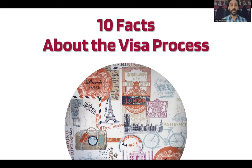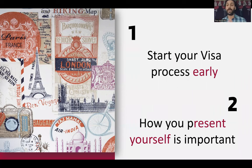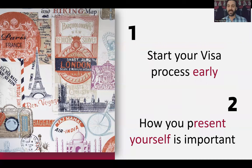Here are the 10 facts about the visa process. Fact one: start the visa process early. You can schedule your visa interview as early as 365 days before the beginning of classes — it used to be 120 days, but the U.S. government recently expanded that to a full year. As soon as you receive your I-20, start immediately: pay the I-901 fee, complete the DS-160, and schedule your interview, ideally within 24 to 48 hours.